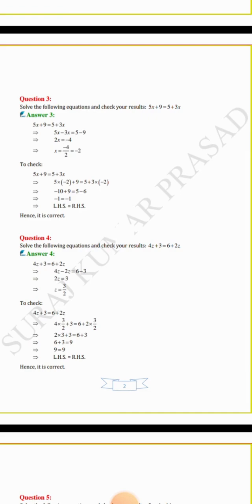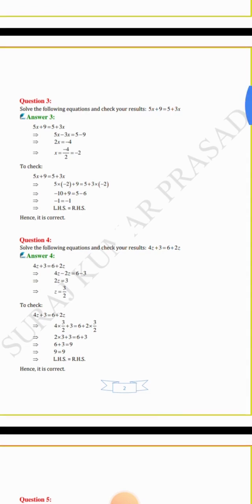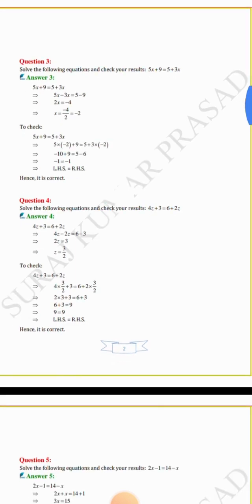To check, we keep x equals minus 2 in place of x. 5 × (−2) + 9 = 5 + 3 × (−2) gives minus 10 plus 9 equals 5 minus 6. Both sides give minus 1, so LHS equals RHS, hence it is verified.